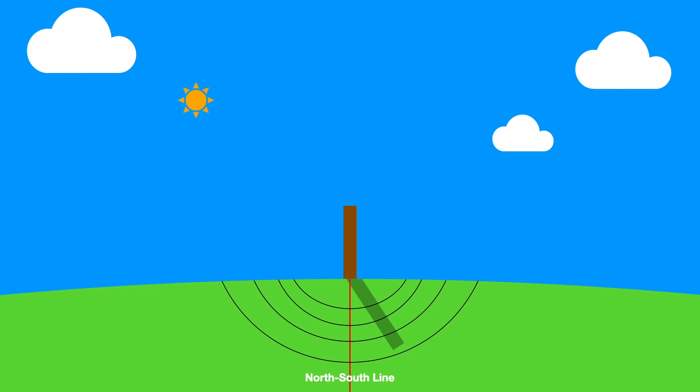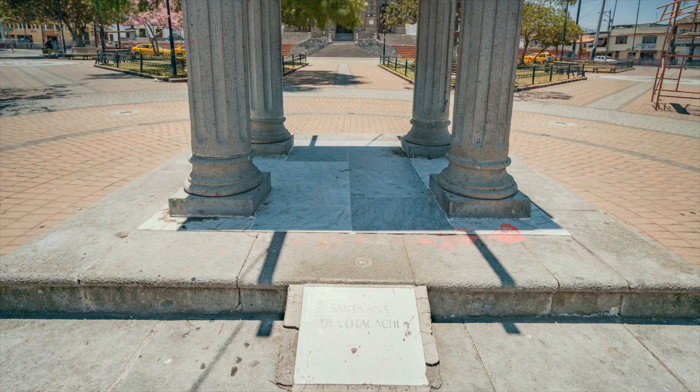Otherwise, draw a line from north to south through the object you're using to measure the sun's shadow. When the sun's shadow lines up with the north-south line, it is solar noon. The final way is to watch the sun's shadow and take the measurement when the shadow is at its shortest length.